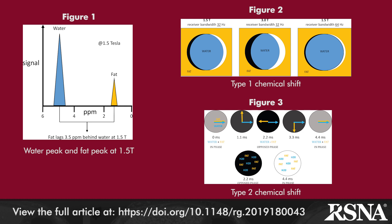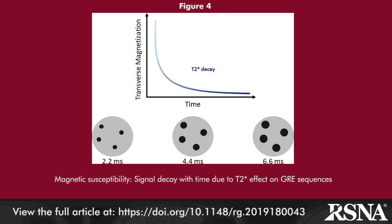An added benefit of dual gradient echo sequences is the ability to assess for signal loss due to magnetic susceptibility associated with the T2 star effect, and can be used to assess for the presence of paramagnetic and superparamagnetic species such as ferritin, hemosiderin, deoxyhemoglobin, and extracellular methemoglobin, as well as metals, air, calcium, and melanin.